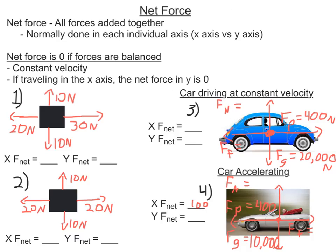Now let's use free body diagrams to solve some simple problems. Net force — also known as sum of the forces — is all the forces added together. When we do this in future problems, we'll find the net force in each individual axis separately: the x-axis and the y-axis. According to Newton's first law, if the net force is zero, all forces are balanced, and there are two possibilities: constant velocity or at rest. Make sure you get that in your notes — if the net forces are zero, there are two possibilities: constant velocity and at rest.